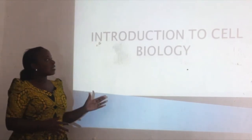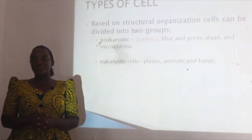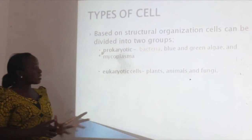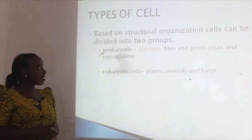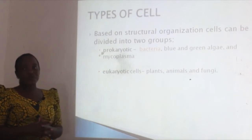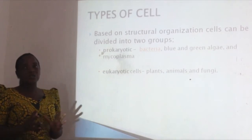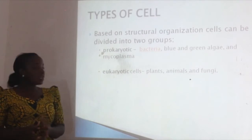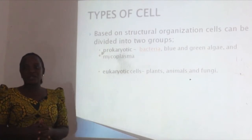Let's begin with the first part: the Introduction to Cell Biology — Types of Cells. Based on structural organization, cells can be divided into two groups. The first one is prokaryotic cells, which are found in bacteria — that's why all bacteria are called prokaryotes. Prokaryotic cells are also found in blue-green algae and mycoplasma. Another group is eukaryotic cells, which include plants, animals, and fungi.